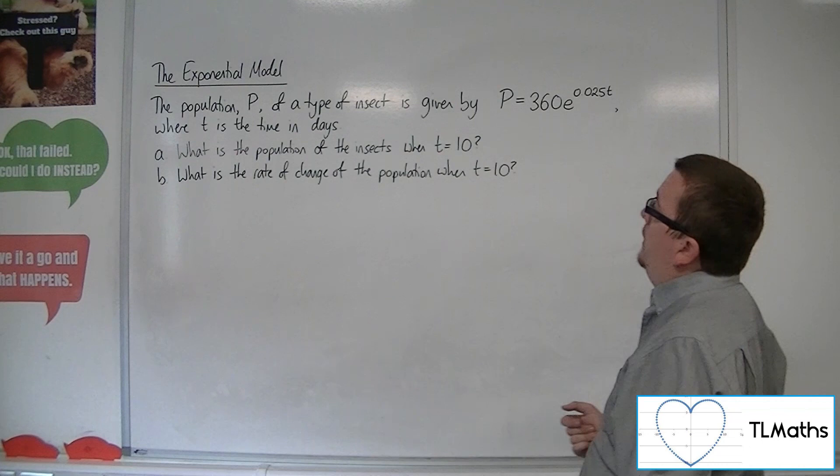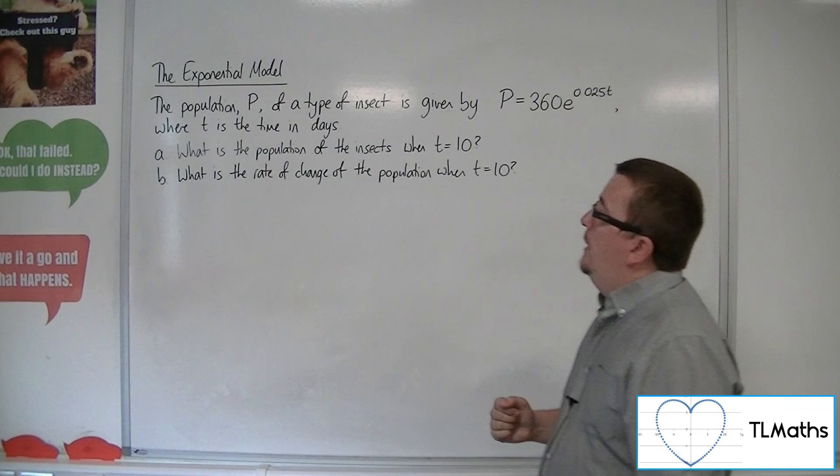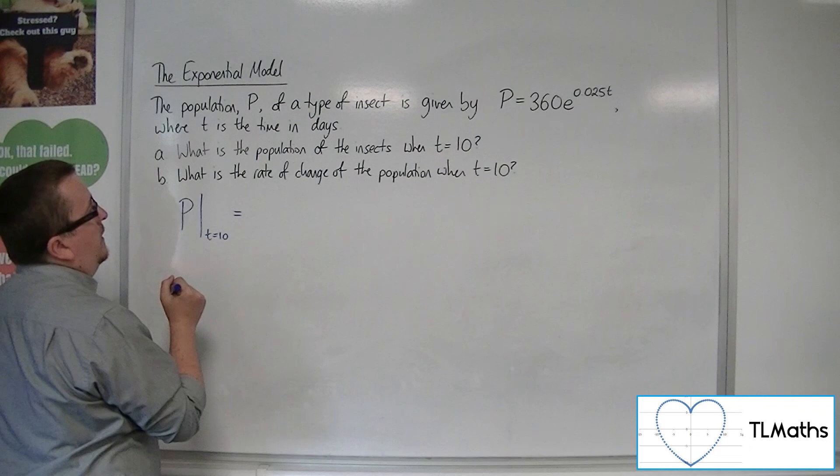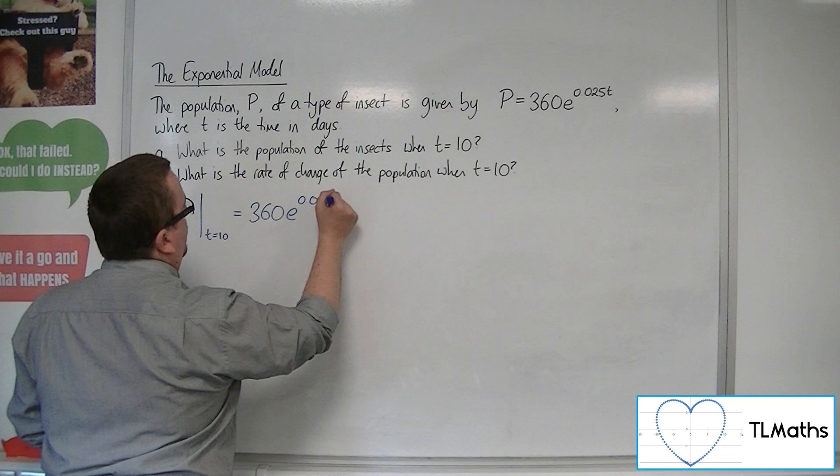Part A: What is the population of the insects when t is 10? So we can say that P evaluated when t is 10 is going to be equal to 360e to the 0.025 times 10.